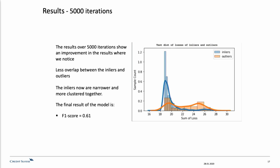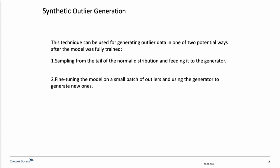Using this type of model comes with some free gains. One could be the production of synthetic outliers. We could produce synthetic outliers either by sampling from the tail of the normal distribution and feeding the data to the generator, or we can fine-tune the model on a small batch of outliers and then use the generator to create new ones.